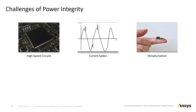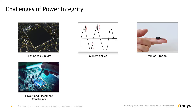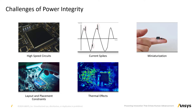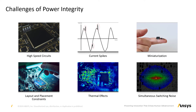Miniaturization: as technology advances, the size of transistors is decreasing, making it complex to maintain a low-impedance path and provide power to each component. Layout constraints and decoupling capacitor placement: layout constraints on a PCB can sometimes restrict the placement of decoupling capacitors. Thermal effects: in modern architectures, as components heat up during operation, their power requirements can also change, making thermal integrity a key aspect of ensuring power integrity. Simultaneous switching noise: when multiple digital components switch simultaneously, it creates voltage droops and noise in the PDN.